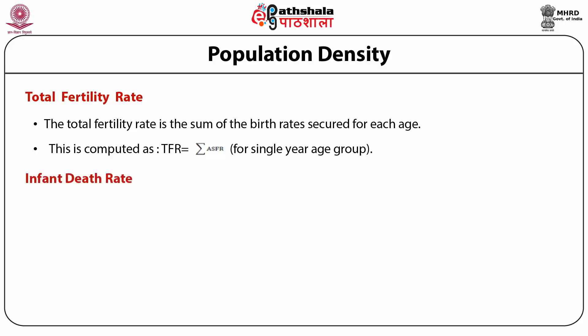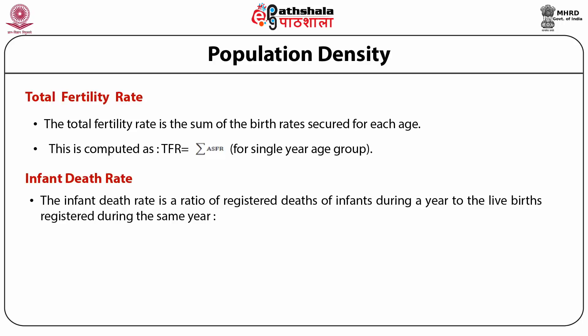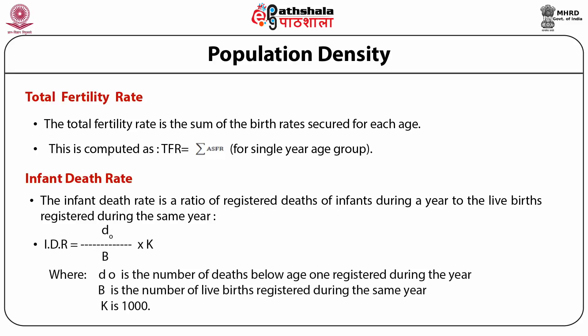Infant Mortality Rate. Infancy in demography is defined as age 0 — those children in the first year of life. It is the ratio of registered deaths of infants during a year to the live births registered during the same year. It is calculated as IMR = D/B × K, where D is the number of deaths below age 1 registered during the year, B is the number of live births registered during the same year, and K is 1000.